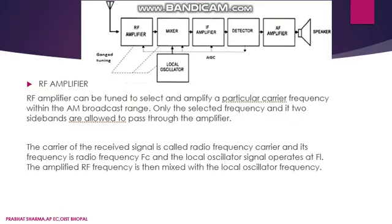The second block is the RF amplifier (radio frequency amplifier). It can be tuned to select and amplify a particular carrier frequency within the AM broadcast range. Only the selected frequency and its two sidebands are allowed to pass through. The RF amplifier amplifies the incoming RF signals.